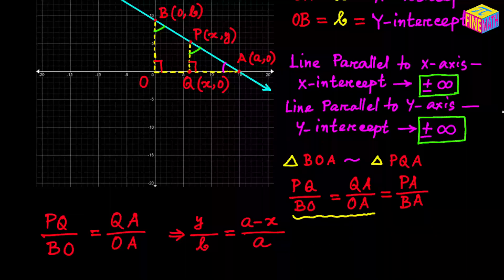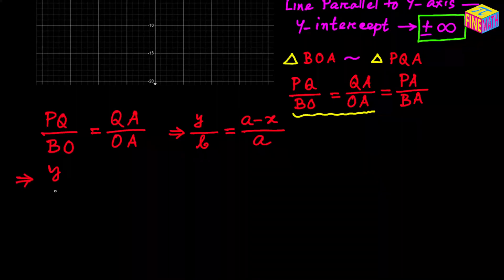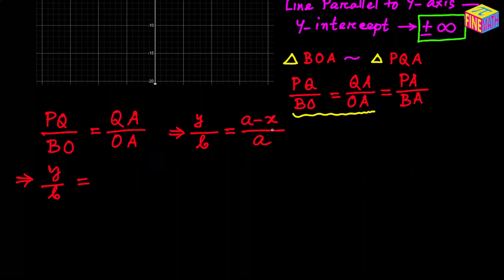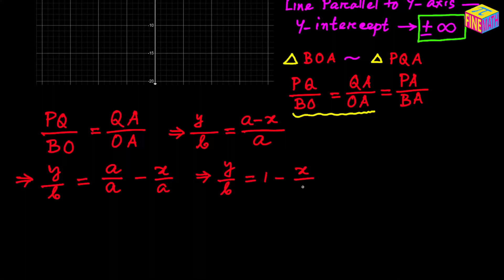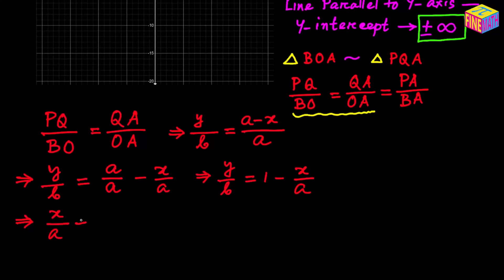So from the ratio we get: y divided by b equals (a minus x) divided by a. Distributing the denominator gives y/b equals a/a minus x/a, which simplifies to y/b equals 1 minus x/a. Bringing the x term to the left side gives x/a plus y/b equals 1. That is our derived equation — the equation of a straight line in the intercept form.